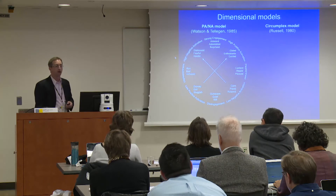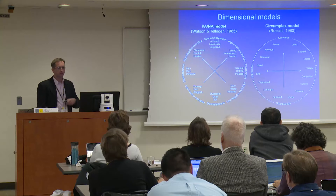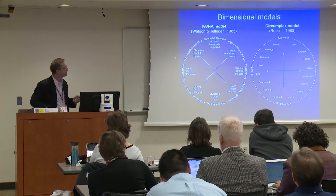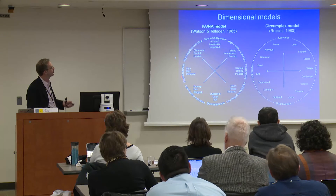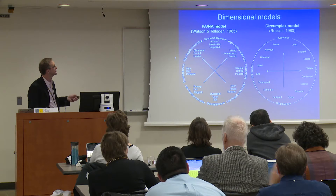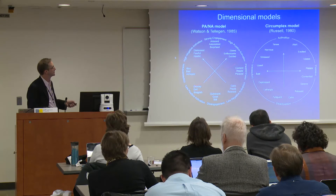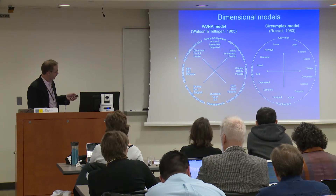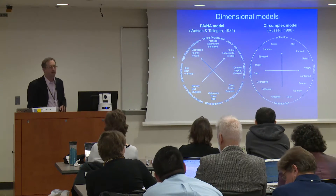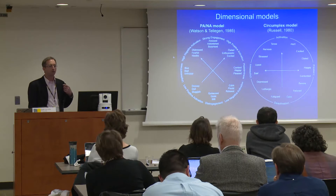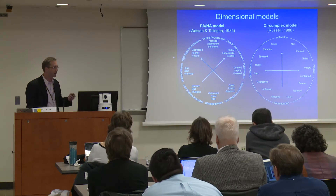There's also the circumplex model. It's often thought there's great disagreement between these two models, but both Watson and Tellegen and Russell actually recognize they are largely similar. When you look at the two models, the emotions basically fall at the same points. Russell focuses on arousal and valence, whereas Watson and Tellegen simply rotate the axis 45 degrees. Both feature a bipolar valence dimension, with happiness and sadness at polar opposite ends.